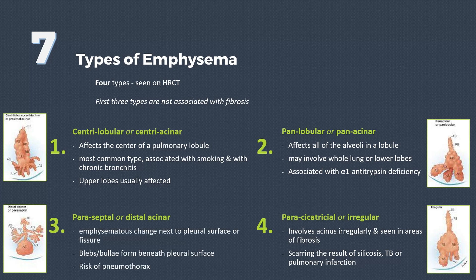Paraseptal emphysema is seen in subpleural surfaces and near fissures. There are blebs or bulla formation, and there is risk of rupture into the pleural space leading to pneumothorax if these blebs turn into giant bullae.